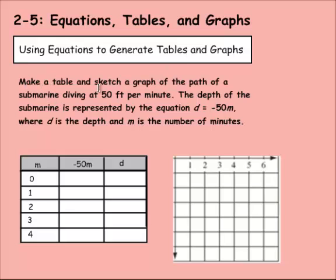We're going to make a table and sketch a graph of the path of a submarine diving at 50 feet per minute. So we're going to go below water, so this is going to go to the negatives, below sea level. The depth of the submarine is represented by the equation d equals negative 50 times m, where d is the depth and m is the number of minutes. So if the minutes increase, our depth should increase too. We should go lower and lower.